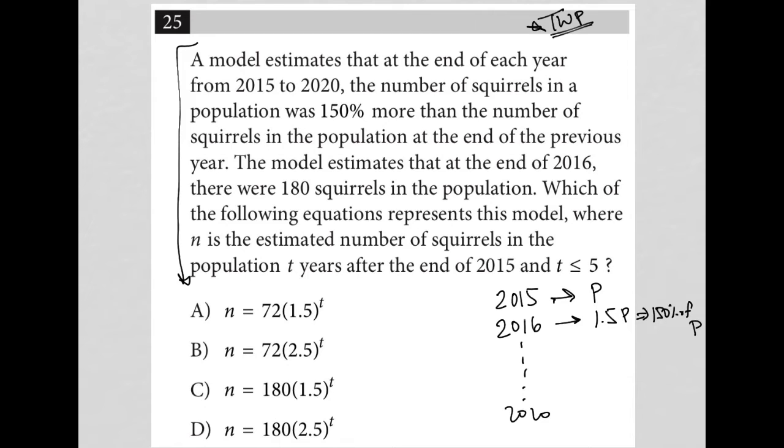The next sentence says the model estimates that at the end of 2016, there were 180 squirrels in a population. So I'm going to erase what I put here because now we have real numbers. I still don't know what it was for 2015, but for 2016, the number of squirrels were 180.